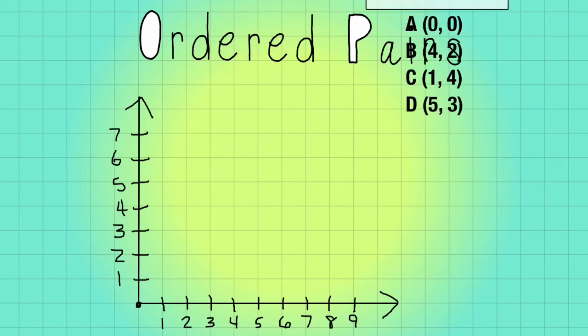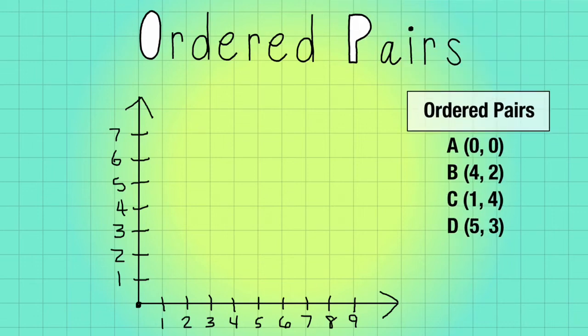Sometimes you're asked to plot multiple ordered pairs. So to do that, first it says plot 0, 0, so 0, 0 is the origin. So I'm going to put an A right there. Again, it's called the origin, 0, 0.